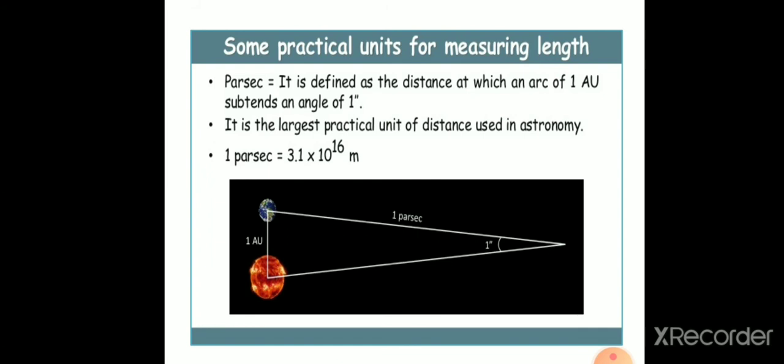Next unit of length is parsec. 1 parsec is defined as the distance at which an arc of one astronomical unit subtends an angle of 1 second. The two lines above 1 is read as 1 second. It is the largest practical unit of distance used in astronomy. 1 parsec is approximately equivalent to 3.1 into 10 raise to 16 meter.